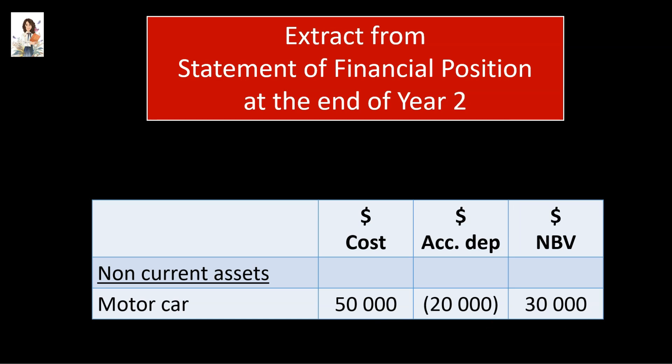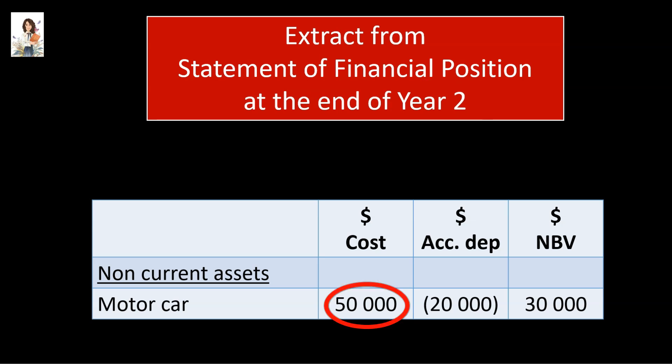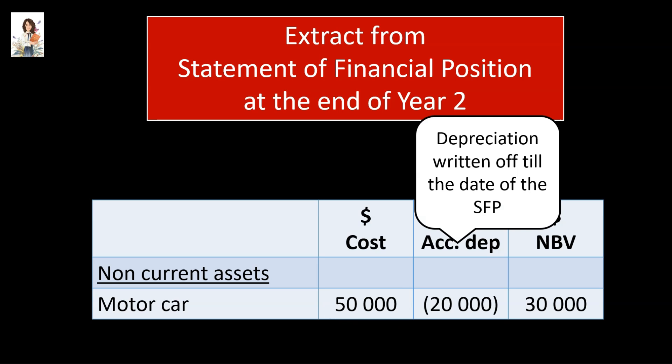In the statement of financial position at the end of year 2, the first column will show the cost of $50,000. The second column will show depreciation till the date of the statement of financial position — that is 2 years of accumulated depreciation — which is $20,000. And the third column will show net book value, which is cost minus accumulated depreciation, which is $50,000 minus $20,000, which is $30,000.